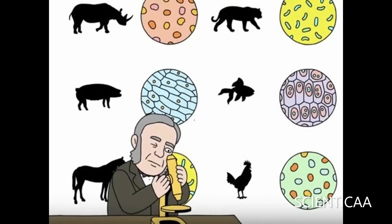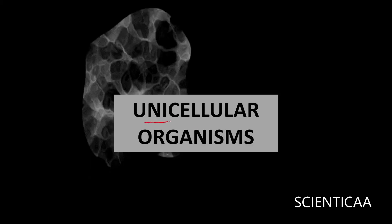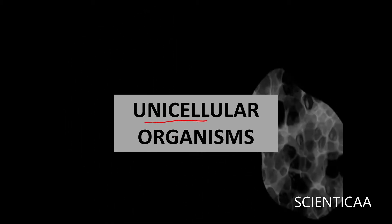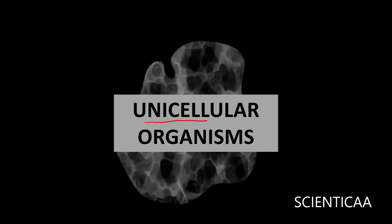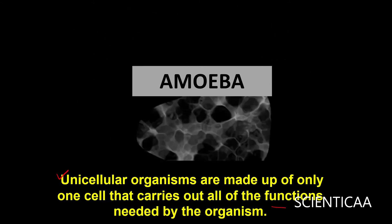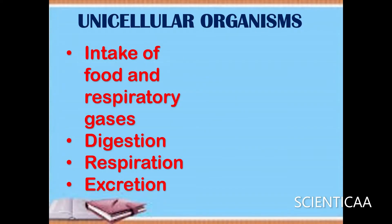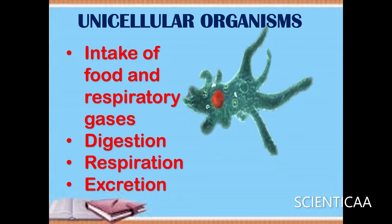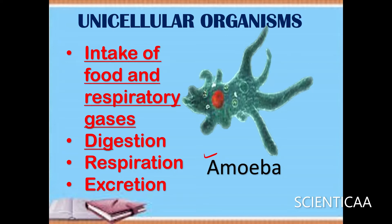Cells are the basic building blocks of all living organisms. Depending upon the number of cells present, organisms can be divided into unicellular or multicellular organisms. Unicellular organisms are made up of only one cell, and this single cell is responsible for carrying out all the functions in the body. In the case of amoeba, various life processes such as intake of food, respiratory gases, digestion, respiration, and excretion are all carried out by the single cell.